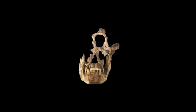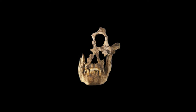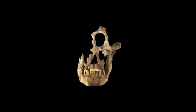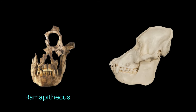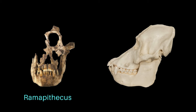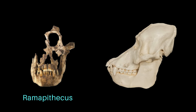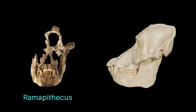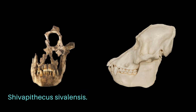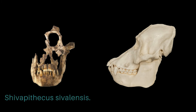In 1977, a nearly complete face and jaws of Sivapithecus were discovered. The face closely resembled that of modern orangutans, confirming a close relationship. This made it clear that Ramapithecus was not a human ancestor but rather closely related to orangutans. Consequently, the name Ramapithecus was dropped in favor of Sivapithecus sivalensis.